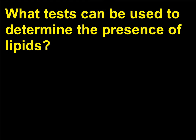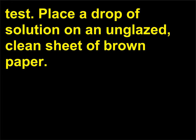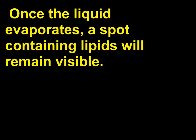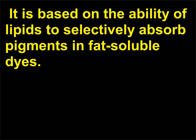What tests can be used to determine the presence of lipids? The grease spot test involves placing a drop of solution on an unglazed, clean sheet of brown paper. Once the liquid evaporates, a spot containing lipids will remain visible. The Sudan 4 test also tests for lipids; it is based on the ability of lipids to selectively absorb pigments in fat-soluble dyes.